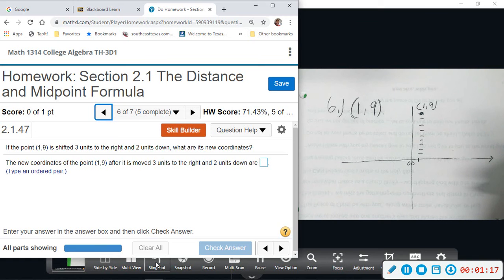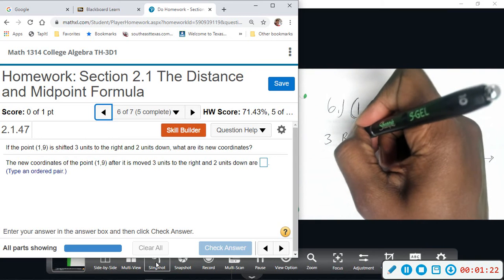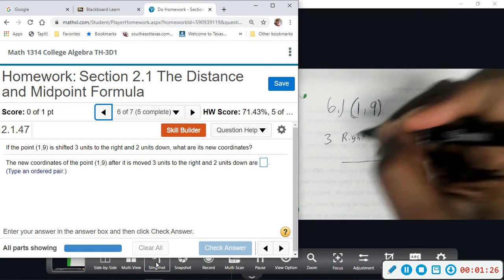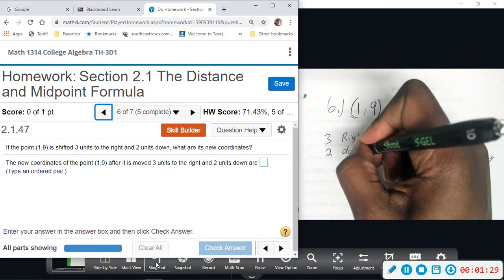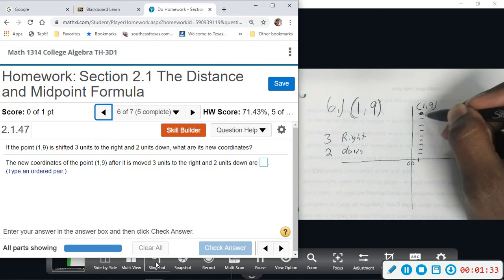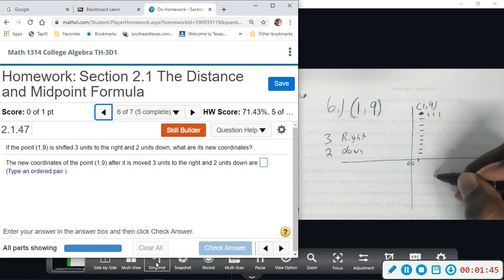Now it says three units to the right and two down. So if I go to the right that's going to change my x-coordinate. We're going to go three units to the right - one, two, three. That will be equivalent to taking that x-coordinate 1 and just adding 3 to it.